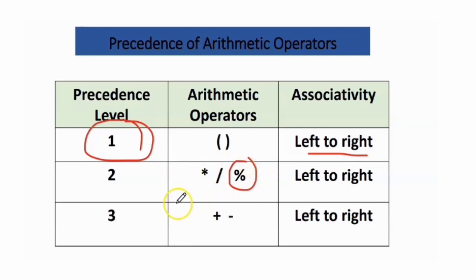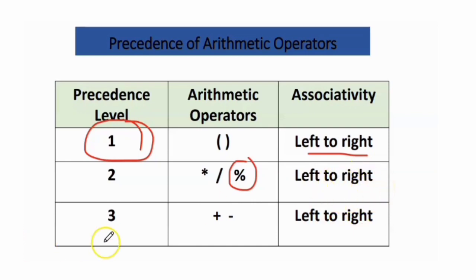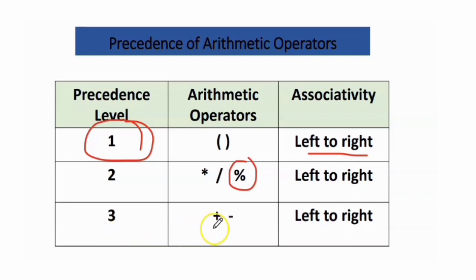If you see these three arithmetic operators on the same line, you must evaluate left to right. The third level is addition and subtraction, also evaluated left to right.